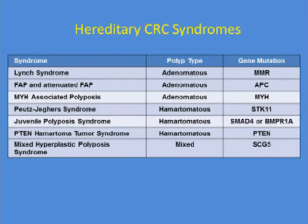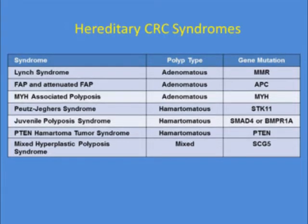The hereditary colorectal cancer syndromes can be identified in part by pathology. These different hereditary colon cancer syndromes are all autosomal dominant in their inheritance pattern, except for the new kid on the block — MYH-associated polyposis, which is a recessive trait.